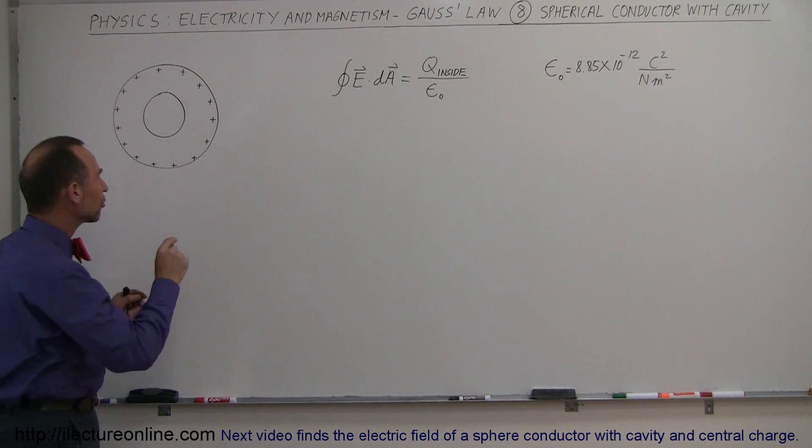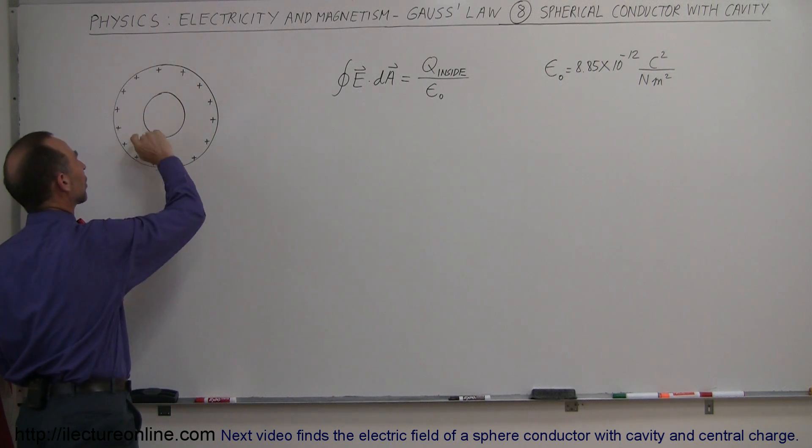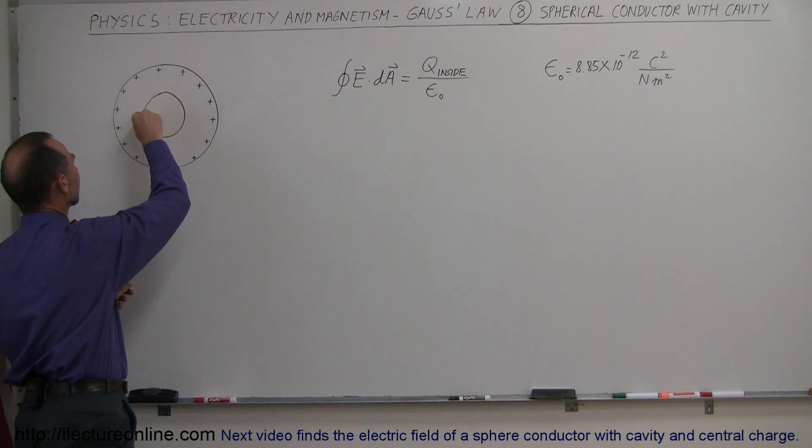If there's no charge inside the cavity, all of the charge of the conductor will reside near the edge of the conductor and no charge will reside on the inside of the conductor.